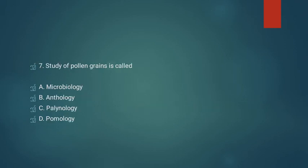Question number seven: the study of pollen grains is called. Option A: microbiology. Option B: anthology. Option C: palynology. Option D: pomology. Microbiology is the study of microorganisms. Anthology is not the study of pollen grains. Palynology is the study of pollen grains, so option C is correct. Pomology is the study of fruits, so option D is not correct.